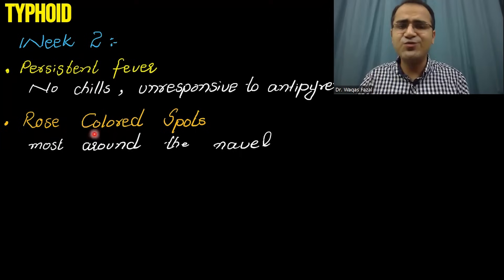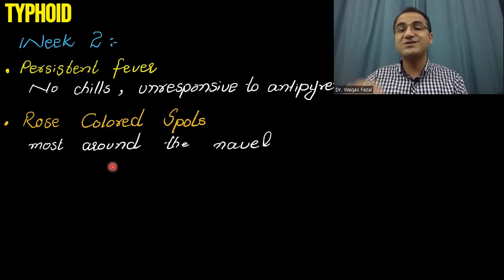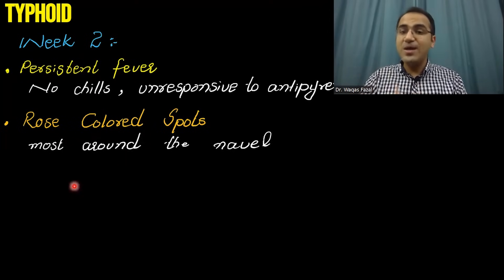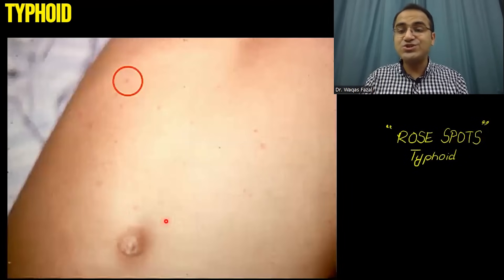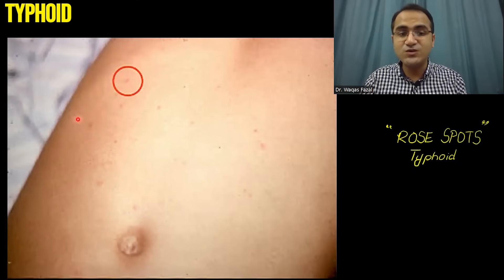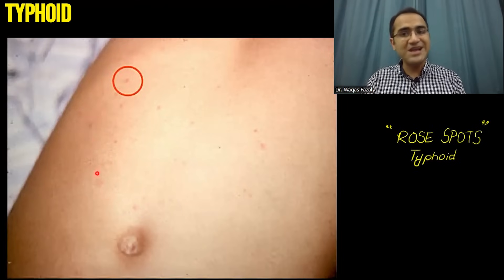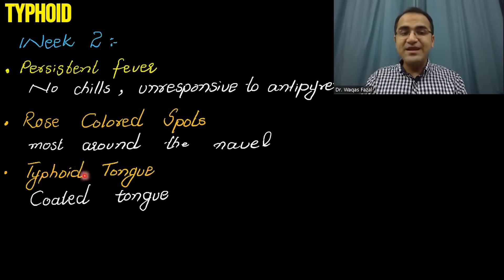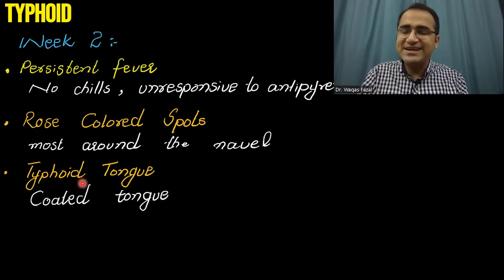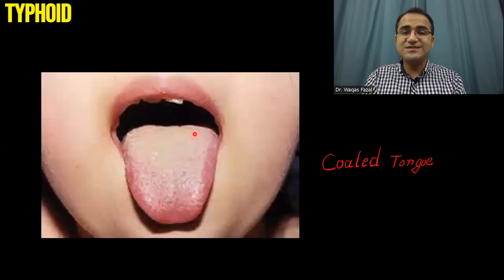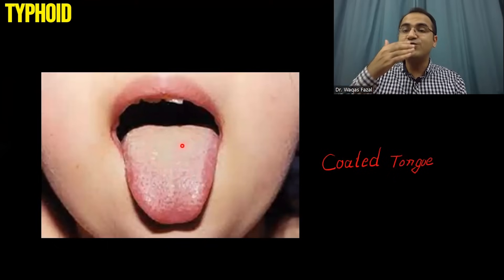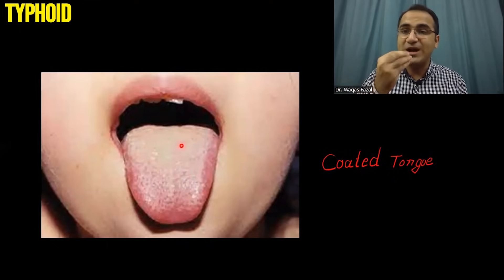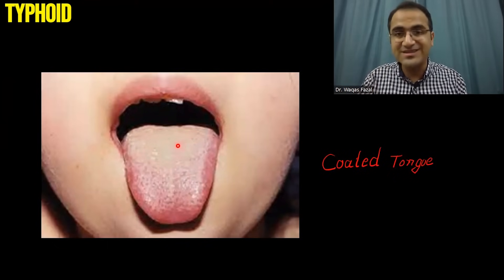In the second week, the patient will also have rose-colored spots, especially around the navel and the lower abdomen. There is a picture showing rose spots in typhoid — a rose spot around the navel. The patient will also have a coated tongue, called typhoid tongue, appearing as a white coating over the tongue.